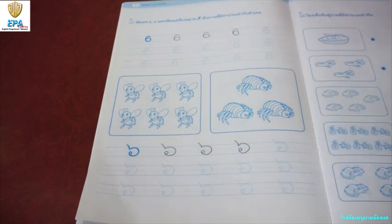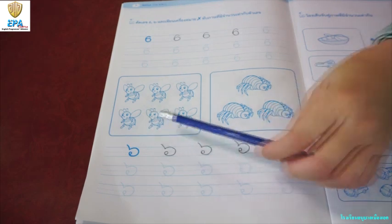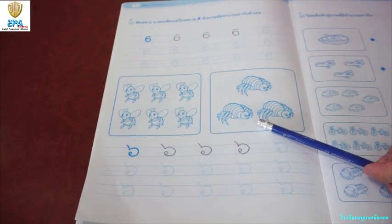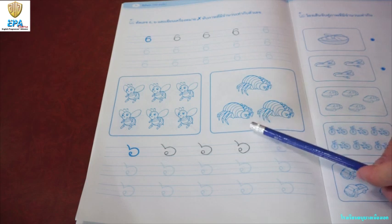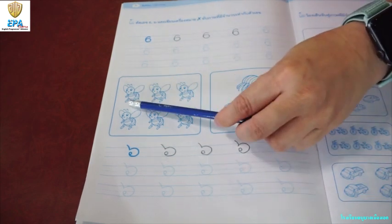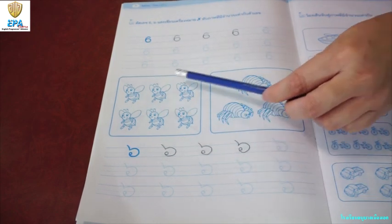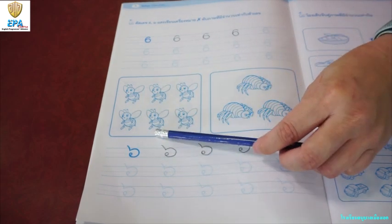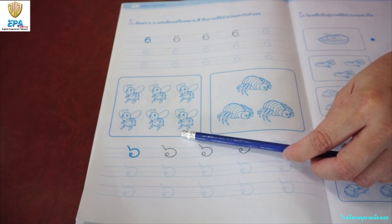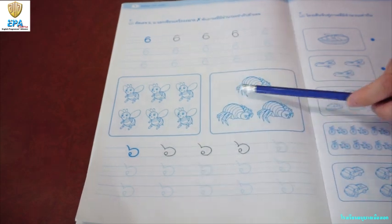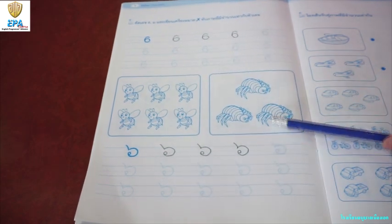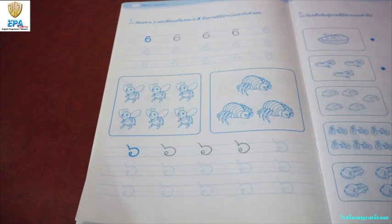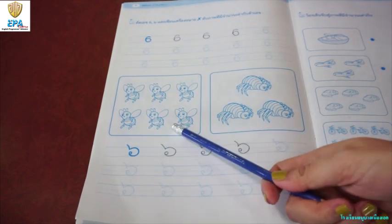Now this time we have here a picture of insects. We are going to count which one has six. Let's try to count: one, two, three, four, five, six. The other one: one, two, three. Which insects are six? Yes, very good.